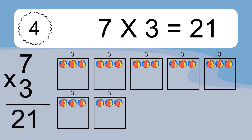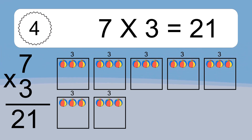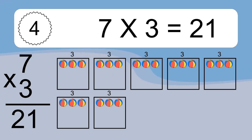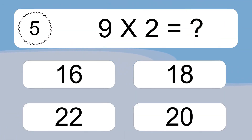We have 7 boxes, and each box has 3 colorful balls inside. If you count all the balls in all the boxes together, you will have 7 times 3 balls. This equals 21 balls.